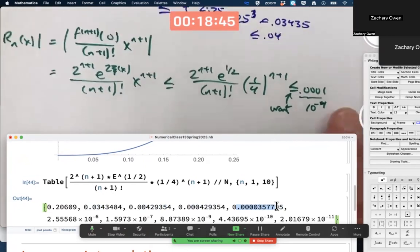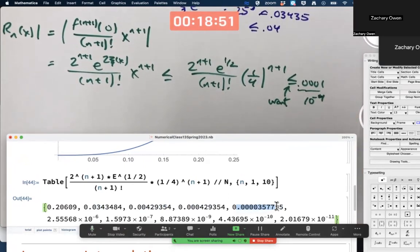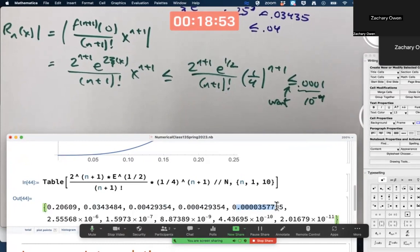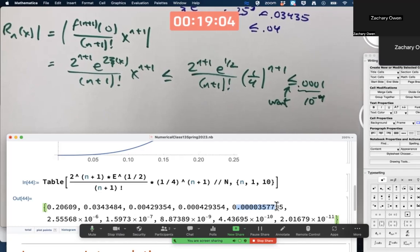So for an approximation at least that good, to e to the 2x over the interval from 0 to 0.25, use a Taylor polynomial of at least degree 5 is the point. On a test, if you only had a calculator, that would take some experimentation. Maybe I'd have to give you a hint or something. I don't know. Or if I let you use Mathematica on the next test, you could do this kind of thing.